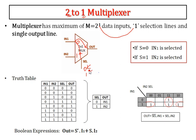Similarly, if my selection input is 1, then it is going to select input 2 and it goes to the output line. If S is 0, input 1 is selected. If S is 1, input 2 is selected. This is the truth table for the 2-to-1 multiplexer. If S is 0 and input is 0, then output is IN1 — whatever you give there is the output. If S is 1, IN2 is the output.